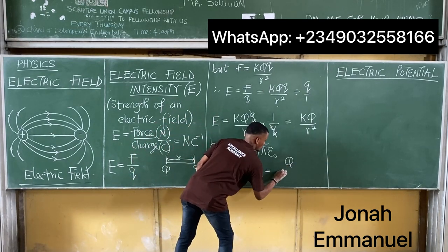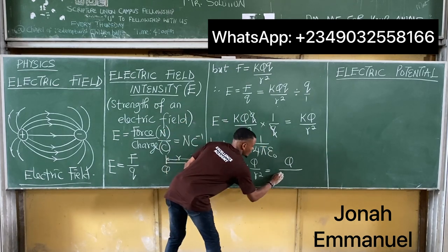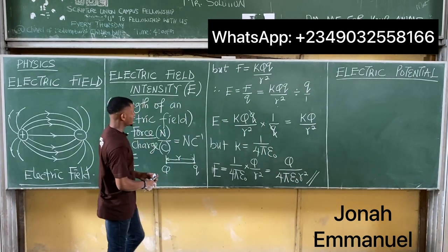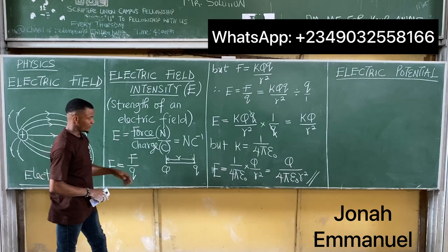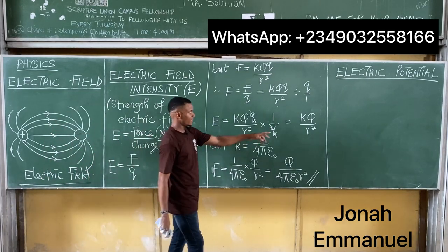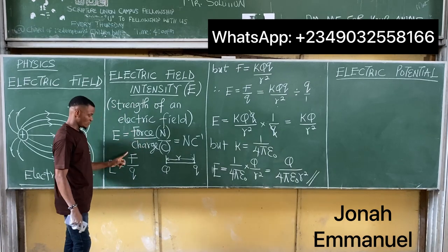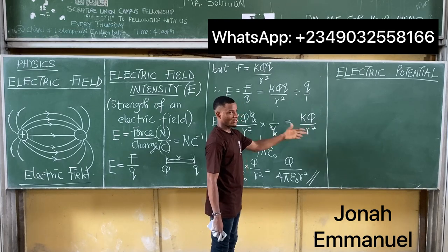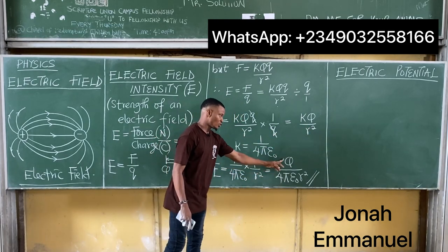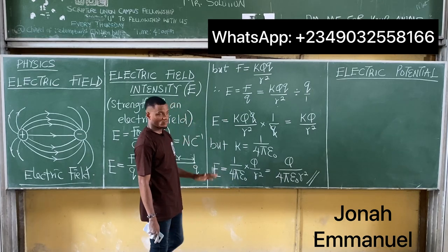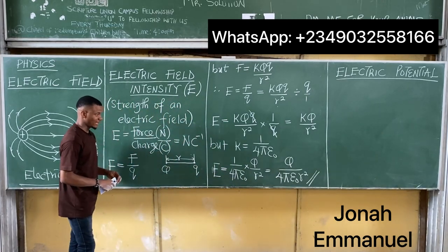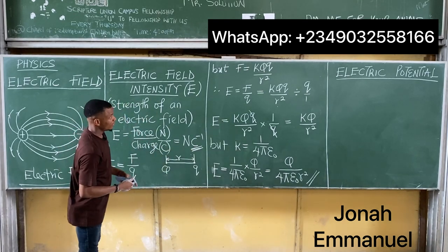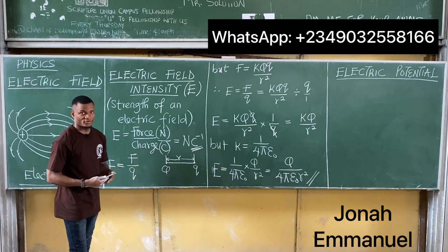So this becomes the formula for electric field intensity. You can use the first form F over Q, or the second form KQ over R squared, or the third form Q over 4πε₀R squared — whichever one, you will get the correct answer. The SI unit for electric field intensity is Newtons per Coulomb.